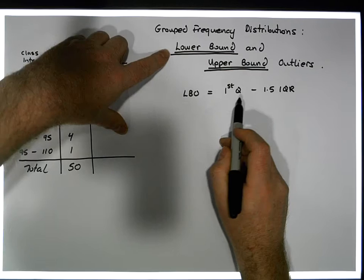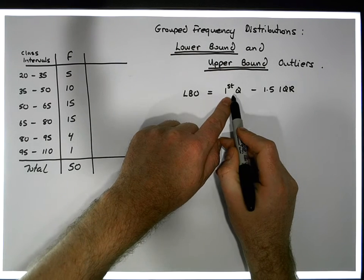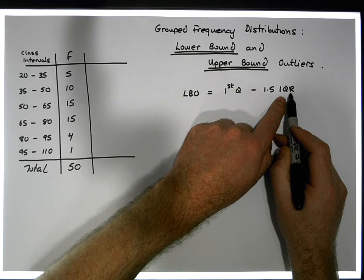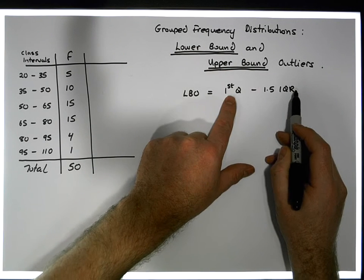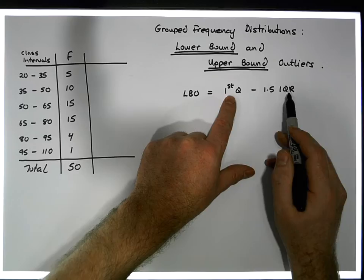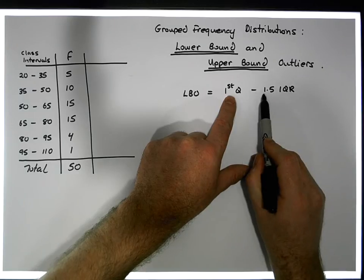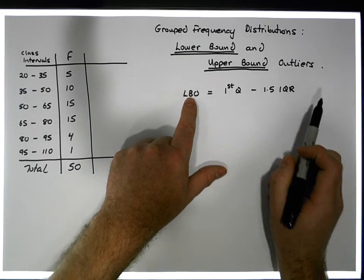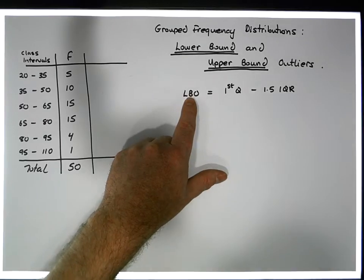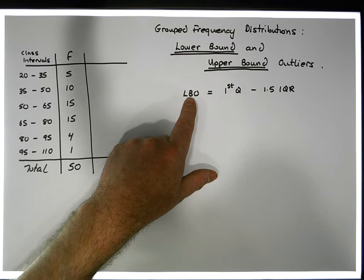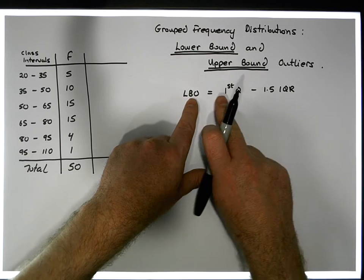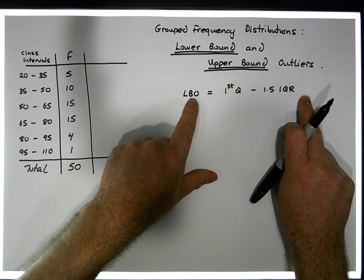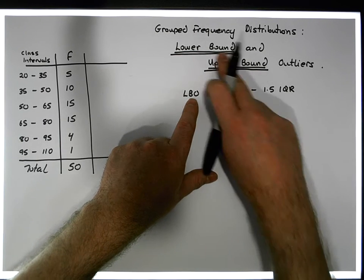So we need to know where the first quartile is, we also need to know the interquartile range, and then we take the first quartile value and subtract 1.5 times the interquartile range. That gives us our demarcation point for lower bound outliers, and any value less than this is classified as an unusually low value.